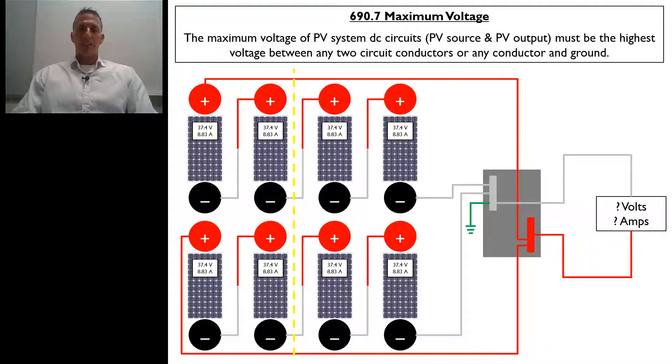In 690.7 of the 2017 National Electrical Code, it talks about maximum voltage. It states that the maximum voltage of PV system DC circuits, and these would be either the PV source and or the PV output circuit, they must be the highest voltage between any two circuit conductors or any conductor and ground.